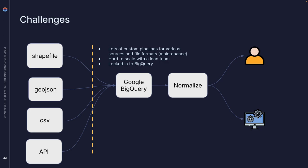The challenge: at one point we were writing a lot of custom pipelines for various sources, bringing them into Google BigQuery so data scientists could sandbox and play with them. That's really hard to scale, especially with a small team. I don't want my engineers to prioritize datasets based on resources — I don't want them to say 'we don't have enough resources to write this pipeline, so we'll sacrifice data scientists.'